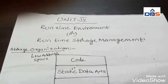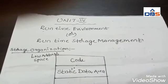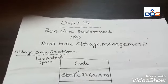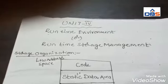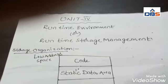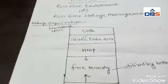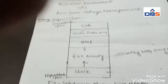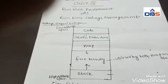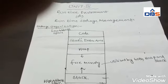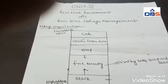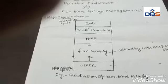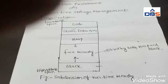This is called runtime storage management. The name itself carries the meaning — runtime means execution time. So how a program is stored during execution time is called runtime storage management. If you see the diagram, we can divide the main memory into four parts: the first part contains the code area, the second part is the static data area, the next one is the heap area, and the next one is the stack area. In between heap and stack we have some free memory.